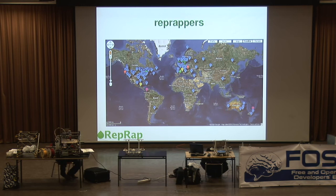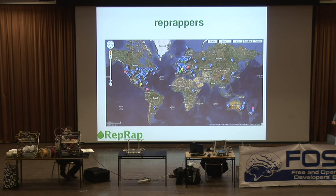The total number of people building machines we don't know, because it's on the web — anyone can download it. I keep discovering people who've built machines whom I've never heard of. The best guess we've got is about two and a half thousand RepRap machines and RepRap derivatives — machines that people have designed based on the RepRap ideas but have either made or sold that are not quite the same design.